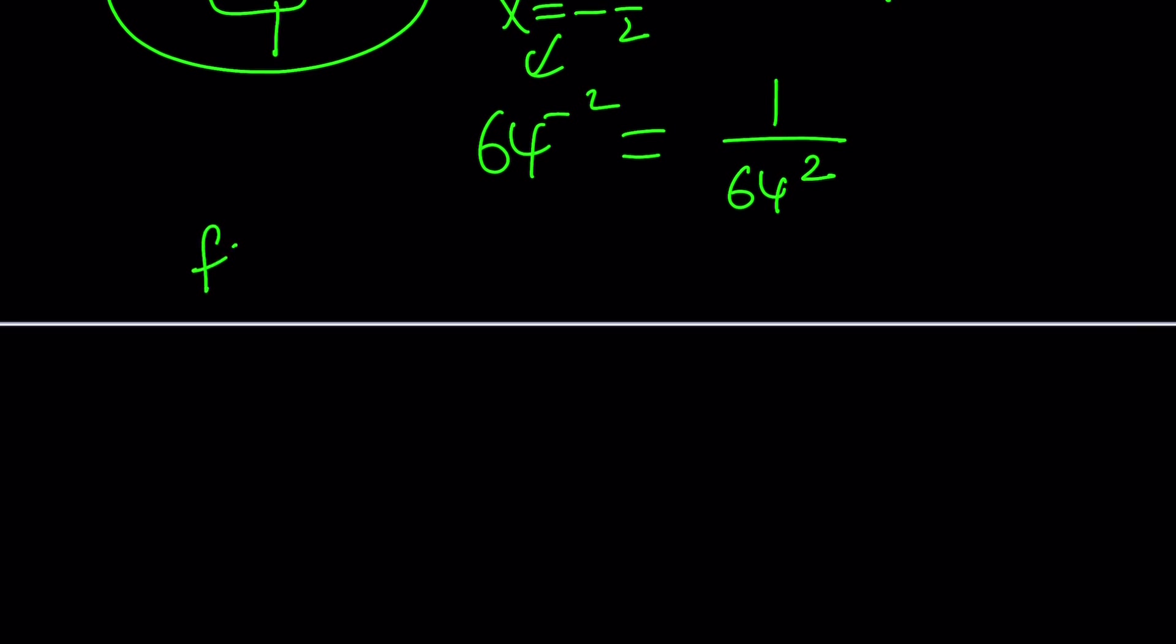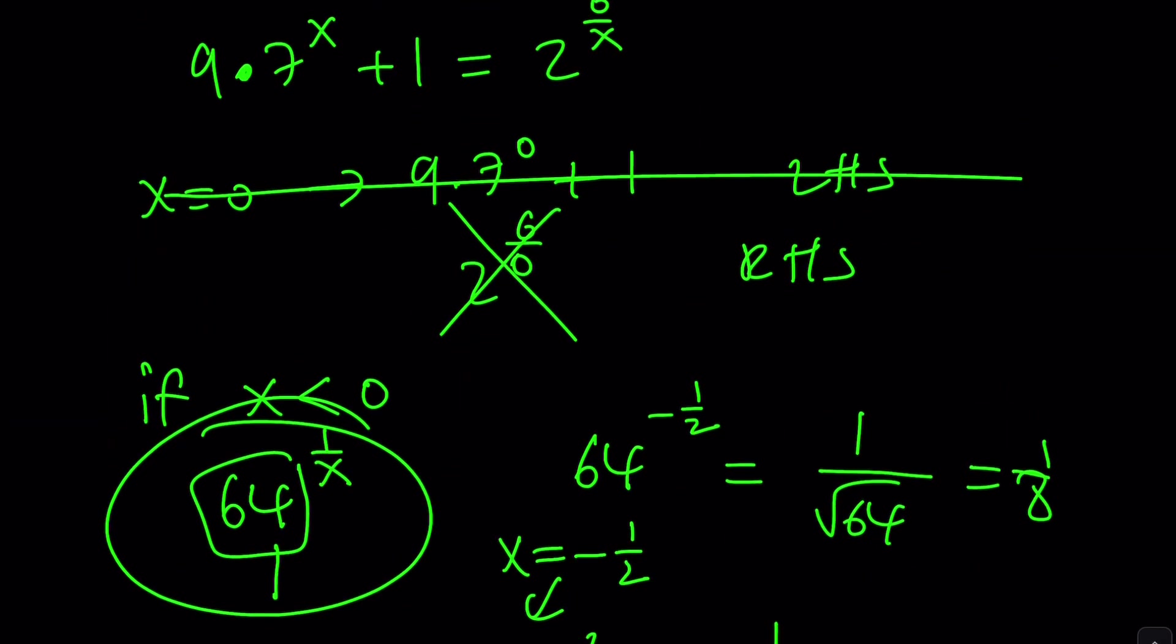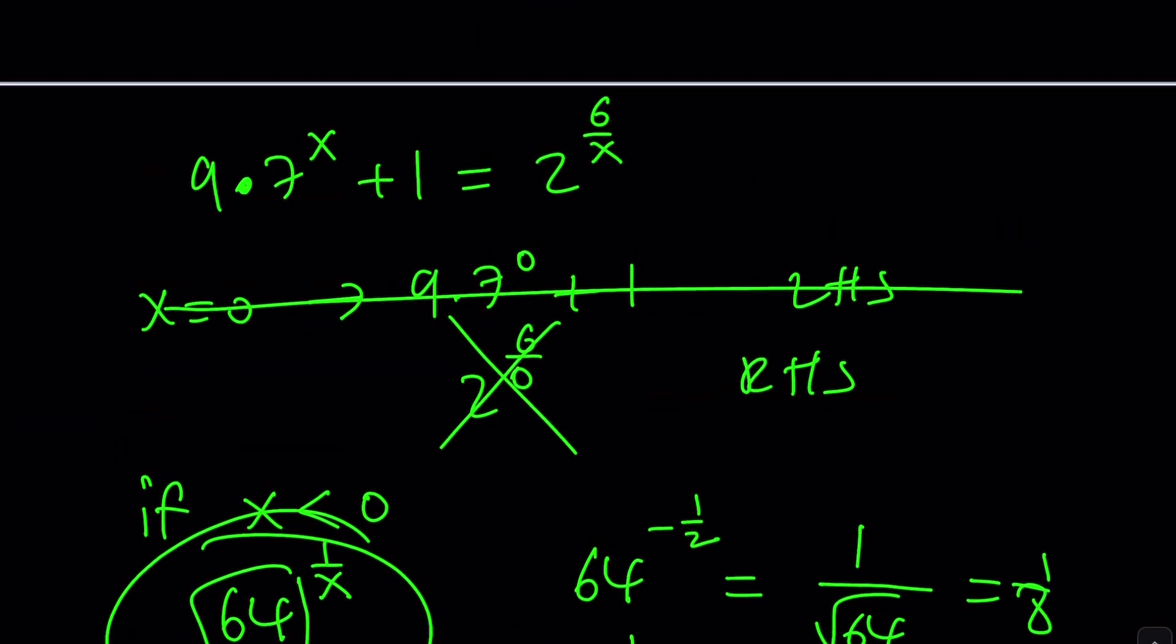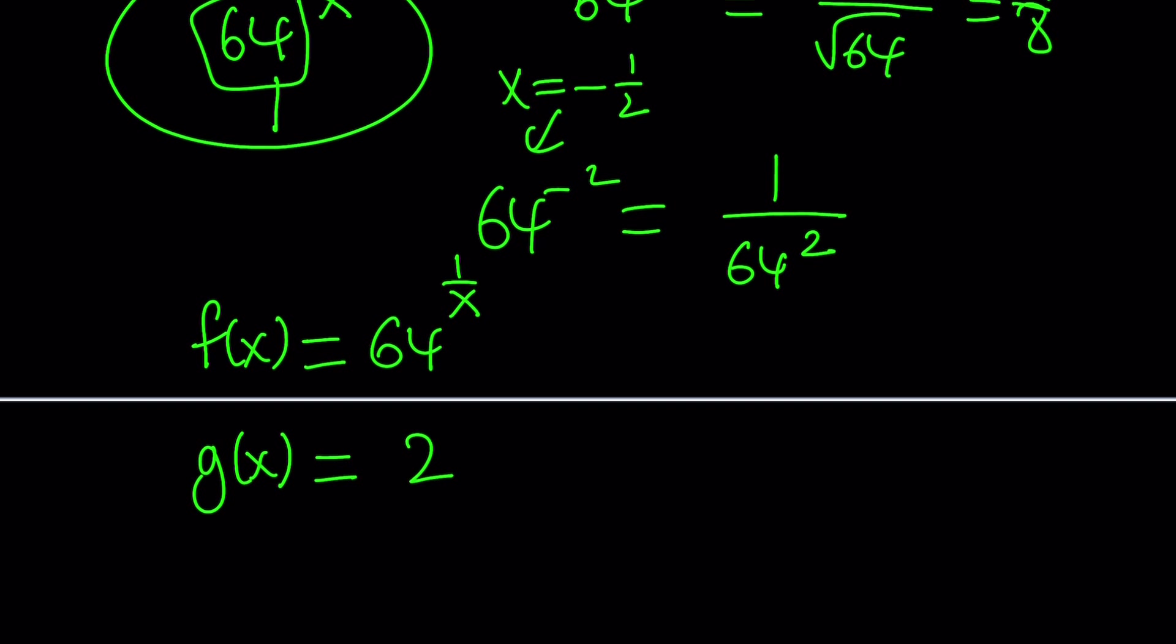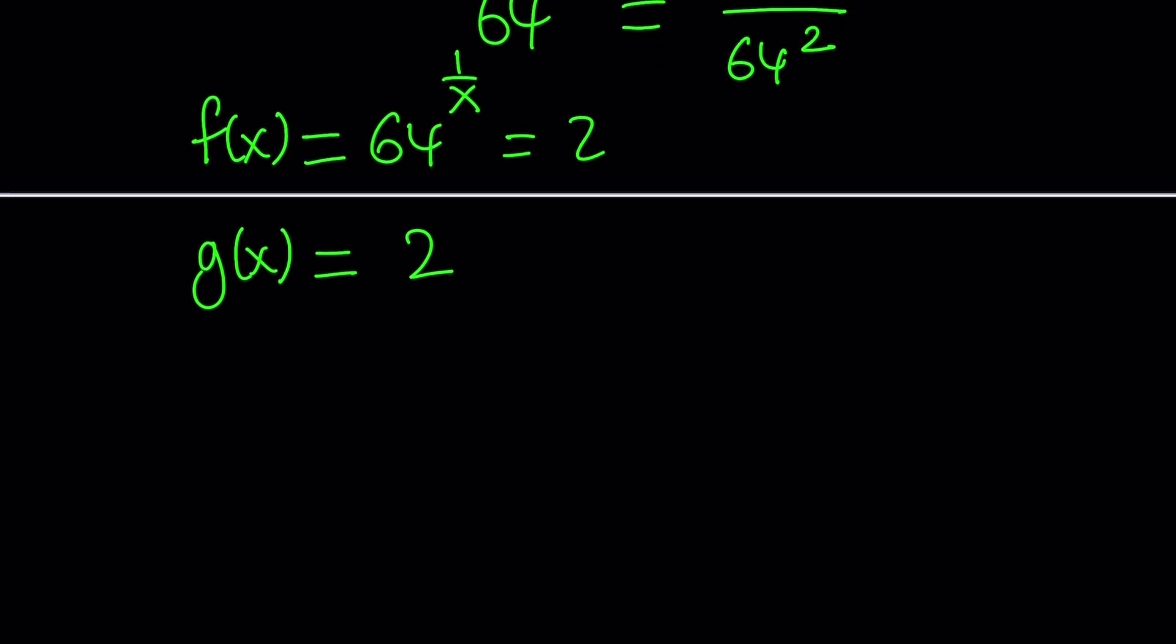Okay, so, let's suppose we set f of x equal to 64 to the power of 1 over x, and g of x equal to 2 to the power of 1 over x. Sorry about that. I turned this into 64 to the power of 1 over x. That's why. Anyways, you get the idea. So, f of x, this is the same as 2 to the power of 6 over x, by the way. And g of x, we're going to define it as 9 times 7 to the power of x plus 1.